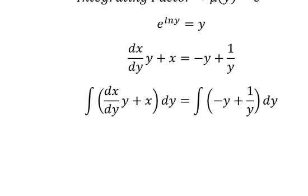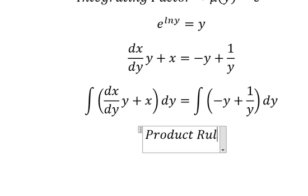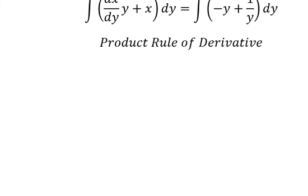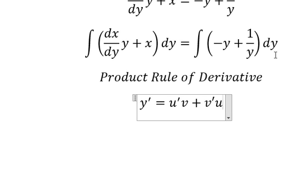Now we can apply the product rule of derivative. So we know that the first derivative of y, we have the first derivative of u multiplied by v plus the first derivative of v multiplied by u.